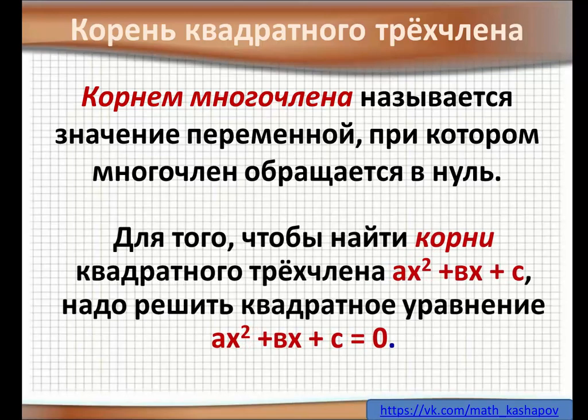Чтобы найти корни квадратного трёхчлена ax² + bx + c, надо решить квадратное уравнение, то есть нужно квадратный трёхчлен приравнять к 0.